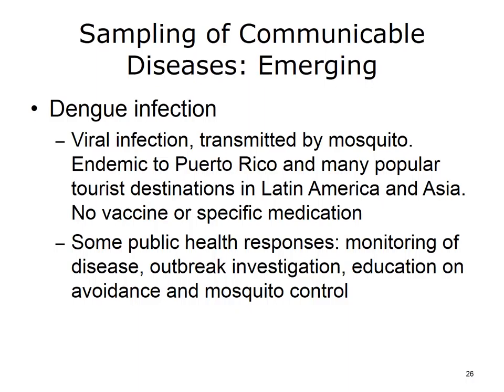Emerging infectious diseases mentioned earlier in this unit continue to appear. One example is dengue infection, native to many popular tourist destinations in Latin America, Asia, and Puerto Rico. This mosquito-transmitted disease is appearing more often in the United States. Public health response includes monitoring, outbreak investigations, and education on avoidance and on mosquito control.